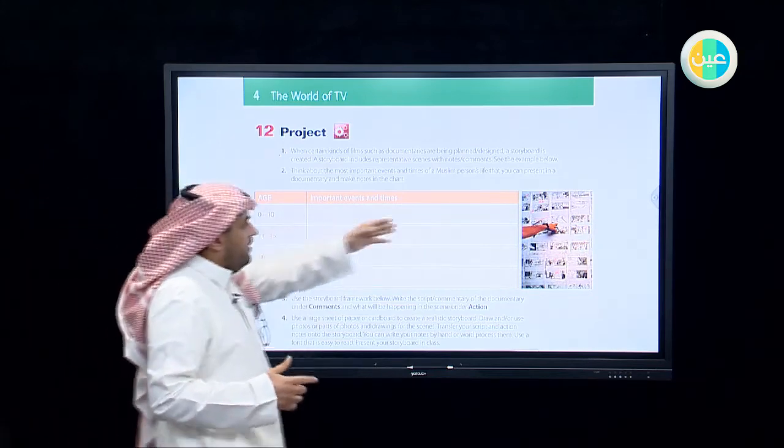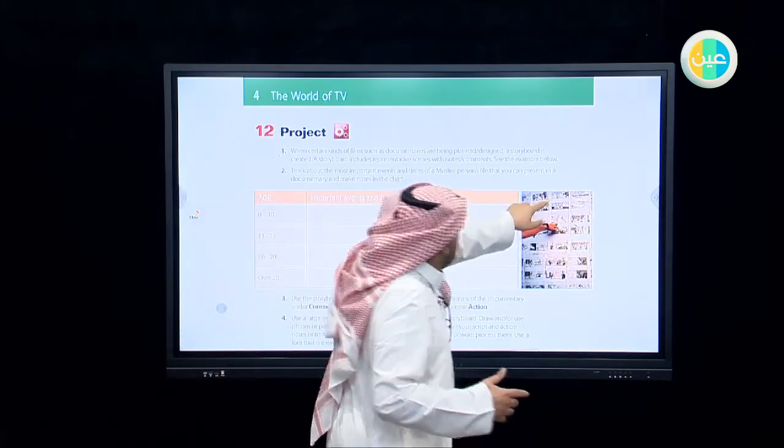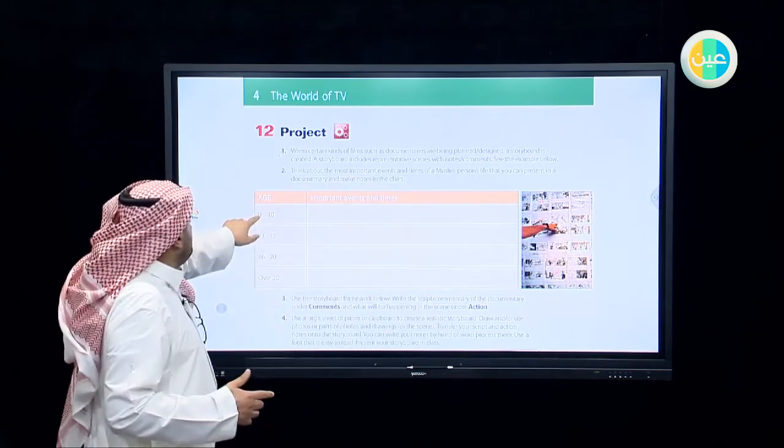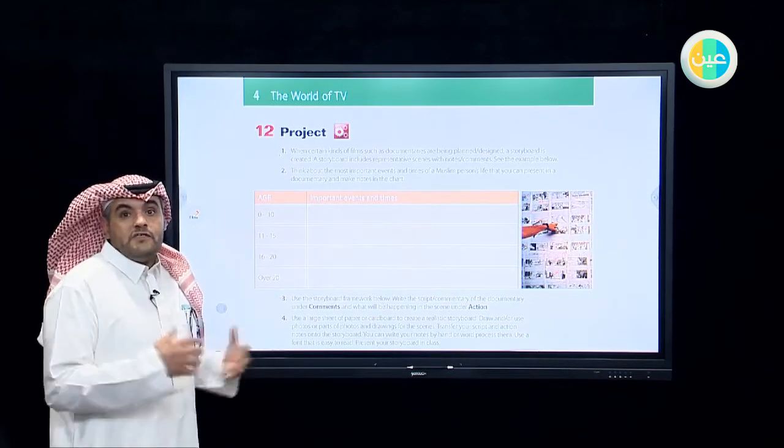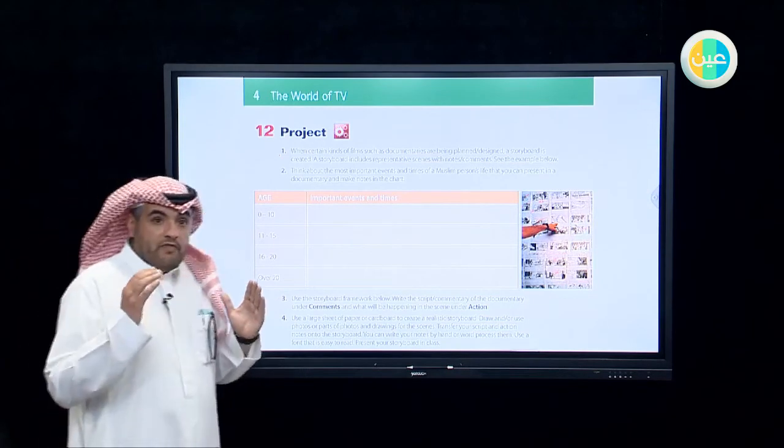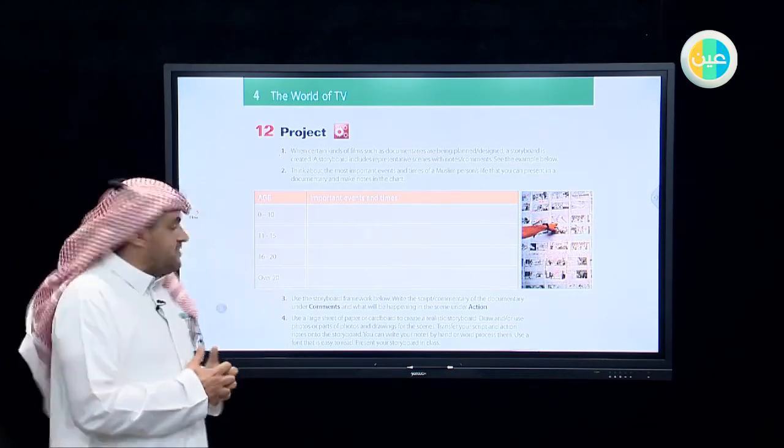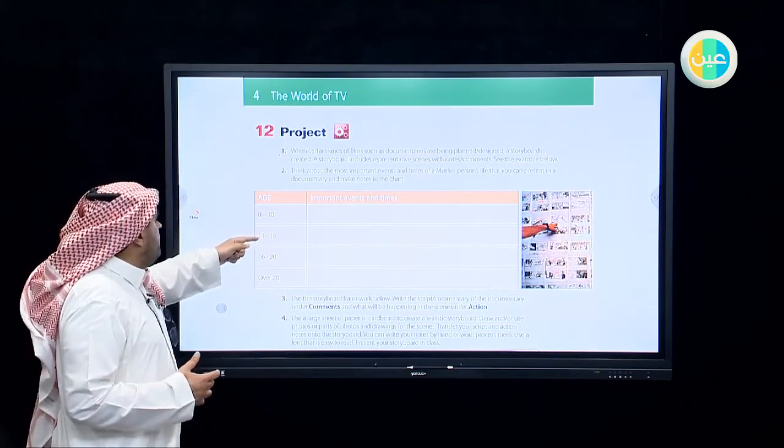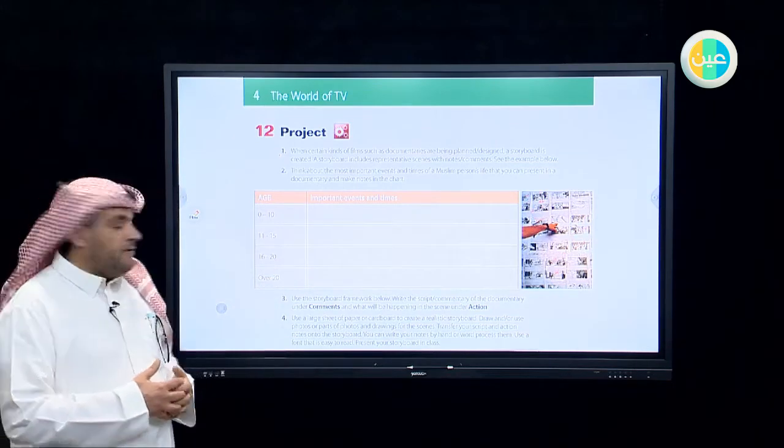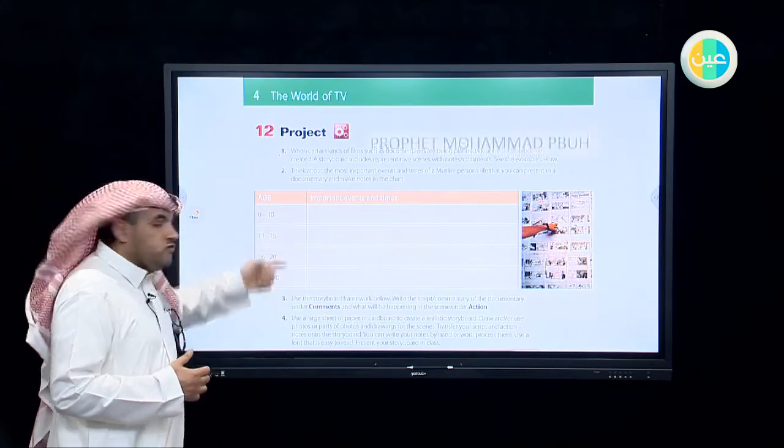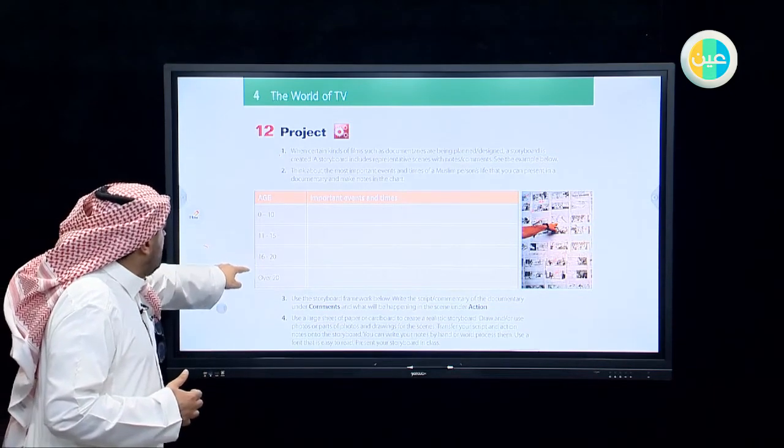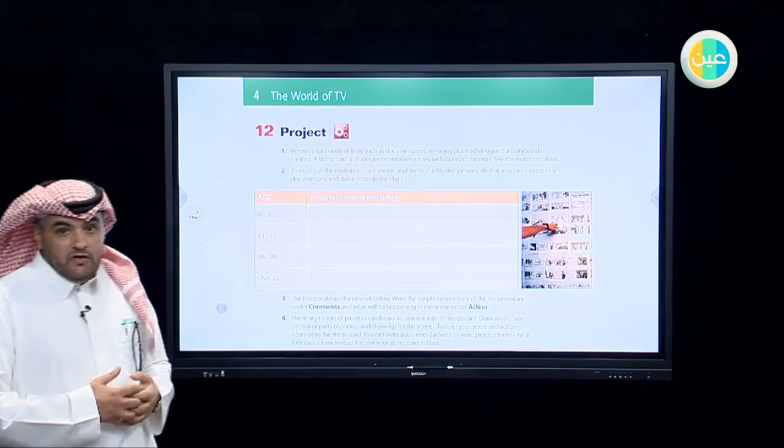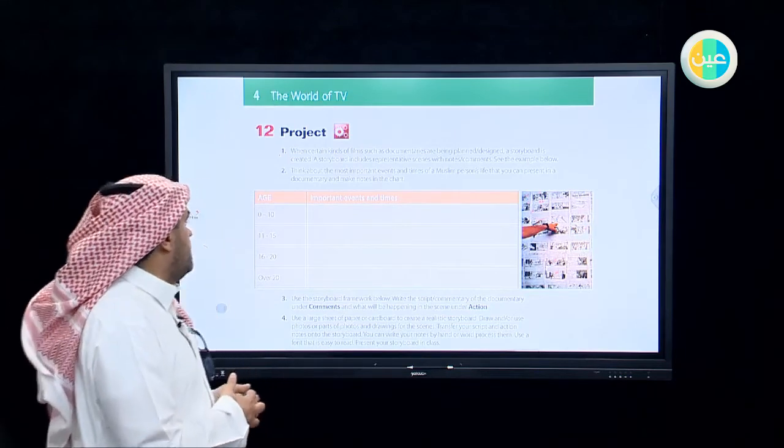So his age and important events and times in his life. This is the storyboard. And here the age from 0 to 10, what happened in his life? What are the most important events in his life? From the age of 11 to 15, what happened to him? From the age of 16 to 20. From the age over 20.